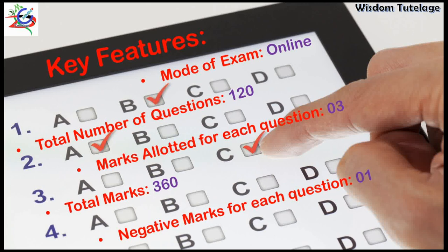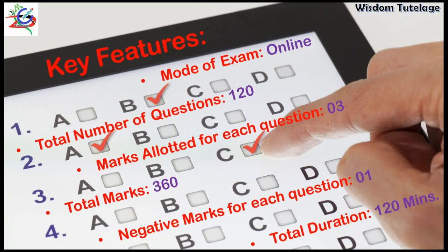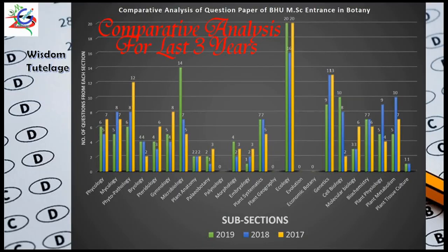Negative marking is also there — for each wrong answer, one mark will be deducted from the total secured marks. The total duration of the exam is 120 minutes, that means two hours.